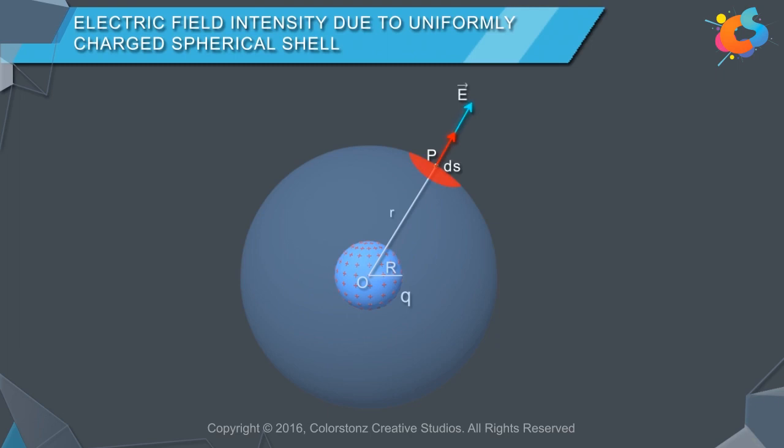Let us consider a small region of area ds around point P in which electric field is uniform. Electric flux through the small area element ds is dφ = E ds cos θ, where θ is the angle between the directions of E and ds. The entire Gaussian sphere can be assumed to be made up of a number of small elements each of area ds.